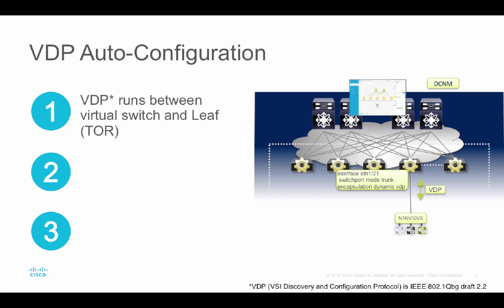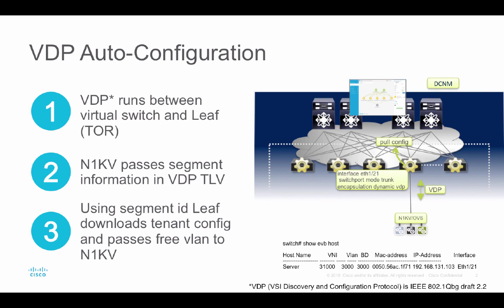We exchange network information between the leaf and N1KV. We derive the segment ID from the Nexus 1000V and query the profile database information on DCNM (Data Center Network Manager), then download the config onto the switch. The switch picks up a free VLAN from a dynamic pool and allocates it to the station N1KV. Whenever the virtual machine needs to communicate, it uses that VLAN when it sends the packet.